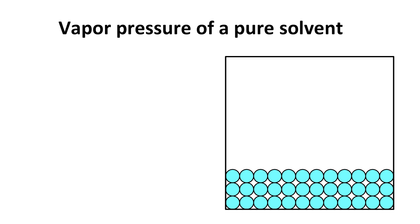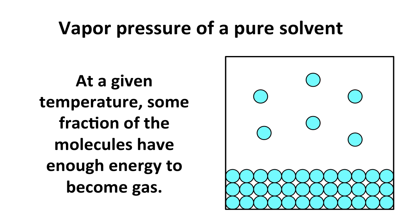If you have a pure liquid, a pure solvent, it's going to have what's known as a vapor pressure. Some of the molecules of the liquid have enough energy to overcome their intermolecular forces and to exist in the gas phase. If we have an open container, these molecules can escape and be replaced by other molecules. If we have a closed container, an equilibrium is reached where there is a constant pressure due to these gas molecules, and at a given temperature, the fraction of the molecules that has enough energy to become gas is constant for a given substance.